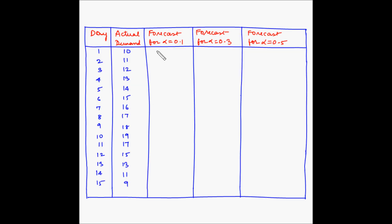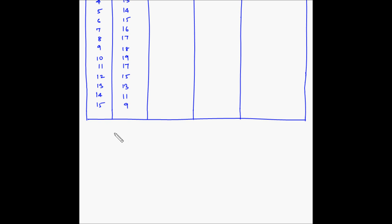This is the data provided: days 1 through 15 with the actual demand for each day. We have to find the forecast using the simple exponential smoothing method for alpha equal to 0.1, 0.3, and 0.5. The formula for simple exponential smoothing is: the forecast for period t equals the forecast for period t minus 1, plus alpha multiplied by the quantity actual demand for period t minus 1 minus the forecast for period t minus 1. Let us first calculate this for alpha equal to 0.1.